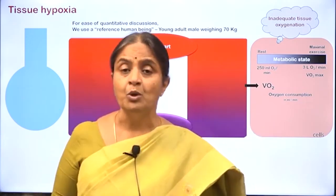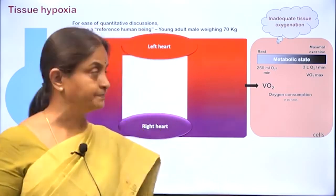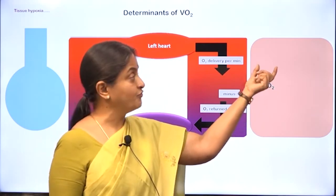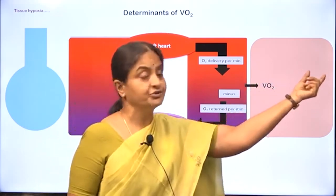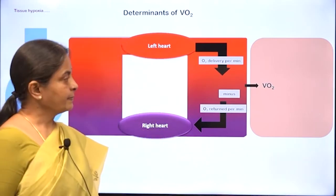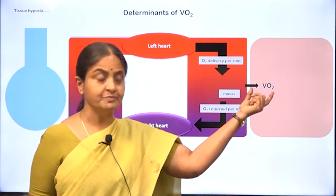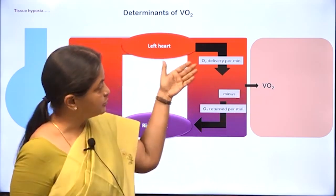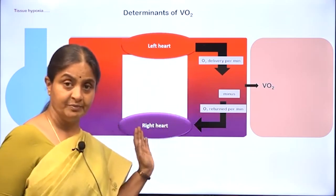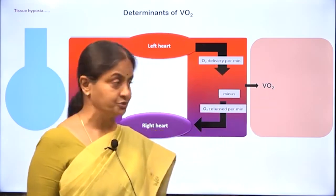We will now see what are the mechanisms which can lead to tissue hypoxia. But prior to that, how do we estimate oxygen consumption by tissues? Oxygen consumption equals oxygen delivered per minute minus oxygen returned in venous blood per minute. The difference between the two gives us oxygen consumption by tissues.